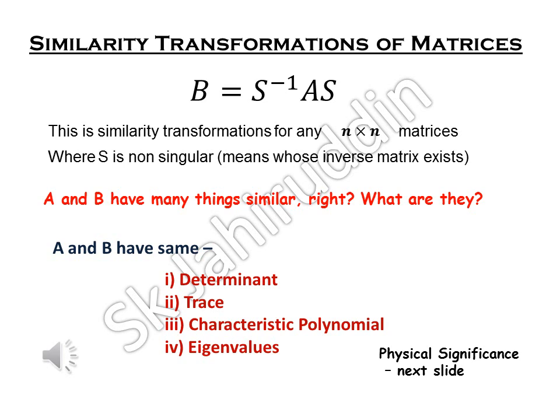So before going to the next slide I just repeat that A and B are similar matrices if they are related by that equation B equals S inverse AS, and A and B have similar determinant, trace, characteristic polynomial and eigenvalues. So next to physical significance which is very important.